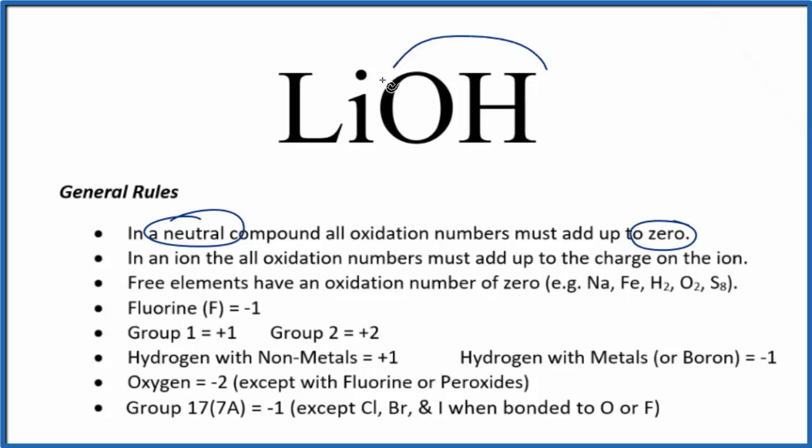Since we know the OH here, this is the hydroxide ion, and the ionic charge on the hydroxide is just one minus. Since we know that, and when we have an ion, the oxidation numbers add up to the charge.